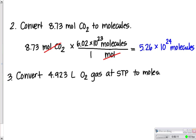Again, we start with our given, 4.923 liters of O2. We look at what we're going to convert it to. We have to convert it to moles from liters. And we would say 1 mole is 22.4 liters. We look at our labels, the liters cancel out.